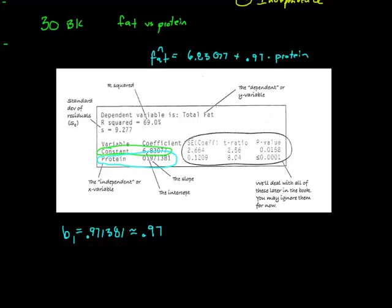You have to understand that if I did a different 30 sandwiches, another sample of 30 sandwiches, I might get a different slope. Or if somebody else came in and did a different sample of 30 sandwiches, they might get a different slope. So we're trying to find out what the true slope is. We found the slope to be 0.97, but what is the true slope?